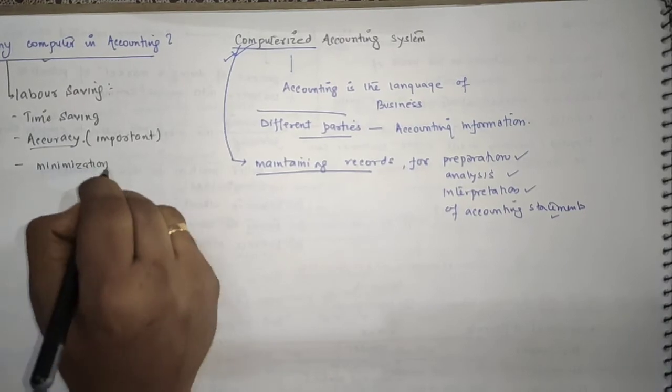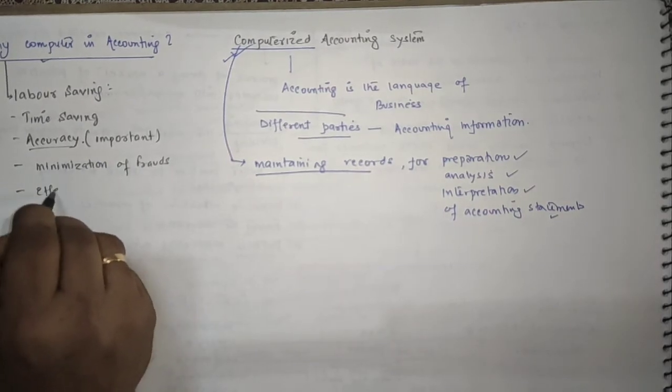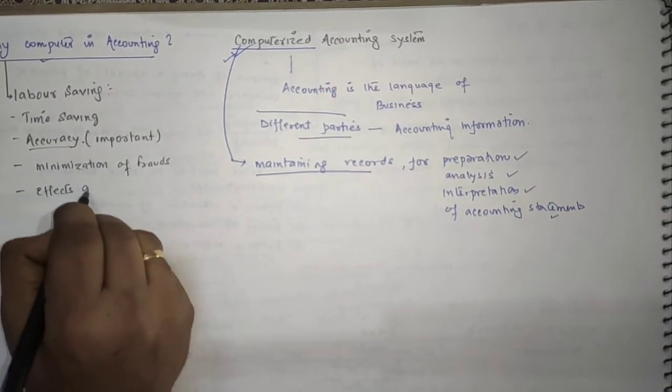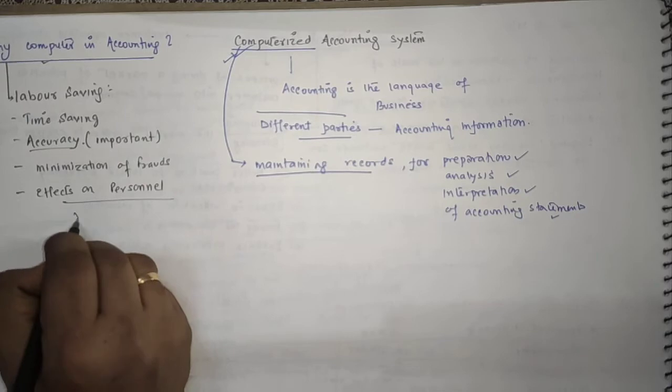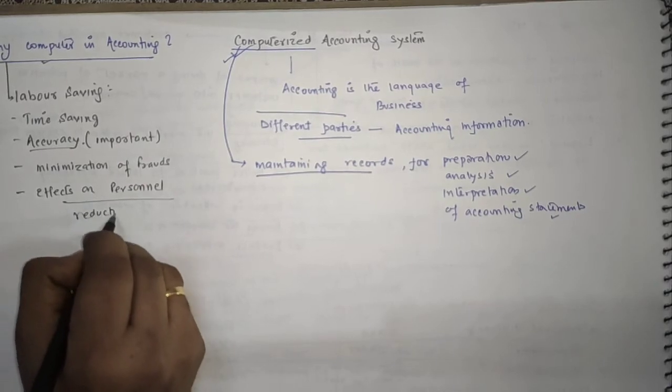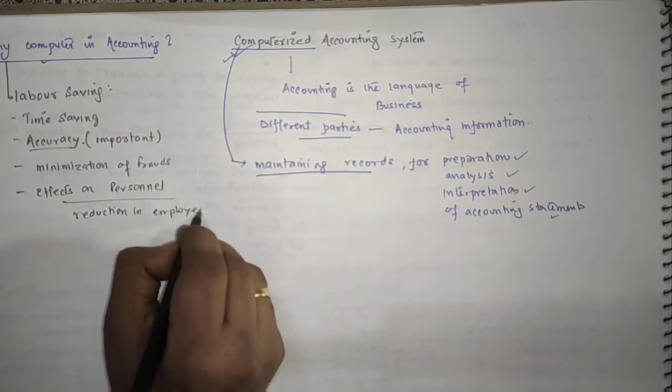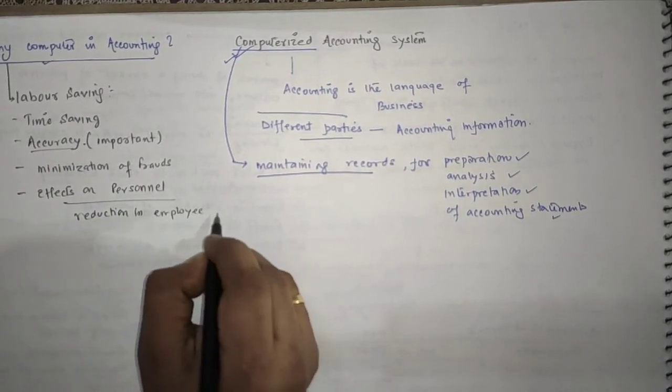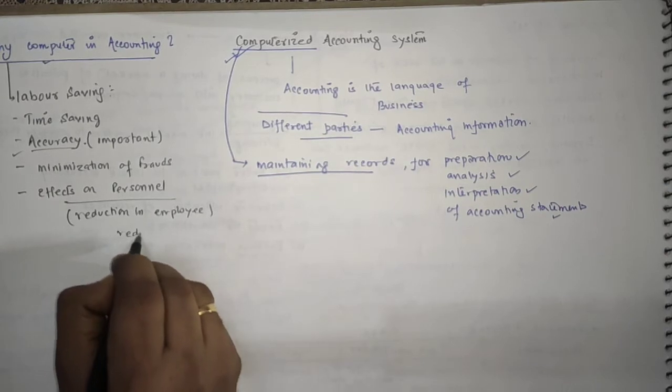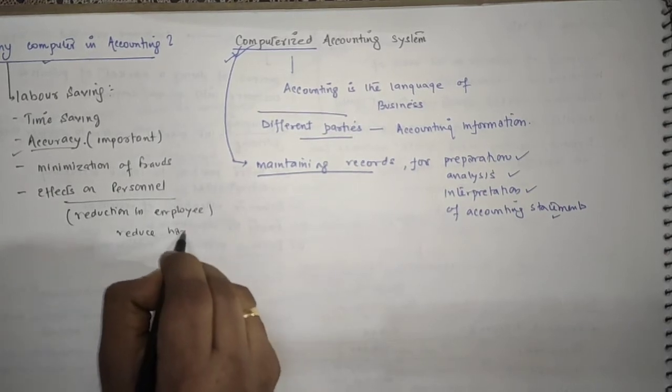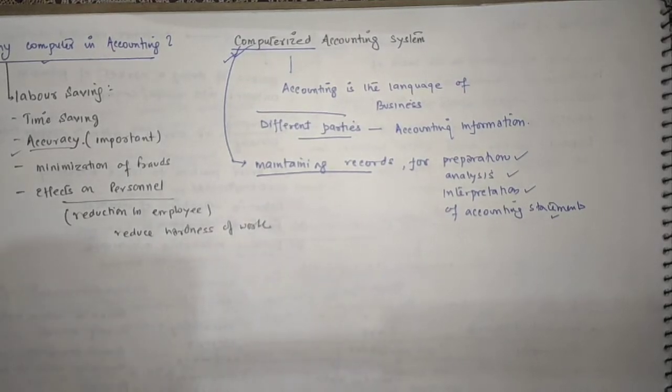Then minimization of frauds. Then effects on personnel, this means reduction in employees. Only two or three employees can work properly and they can give good accuracy. We also here reduce hardness of work. It effects on personnel; that's why we need computer in accounting.